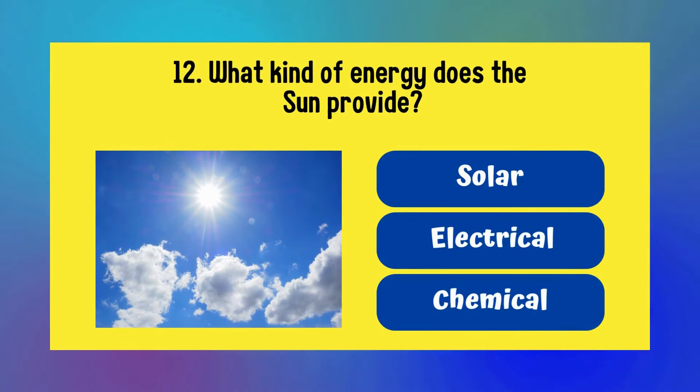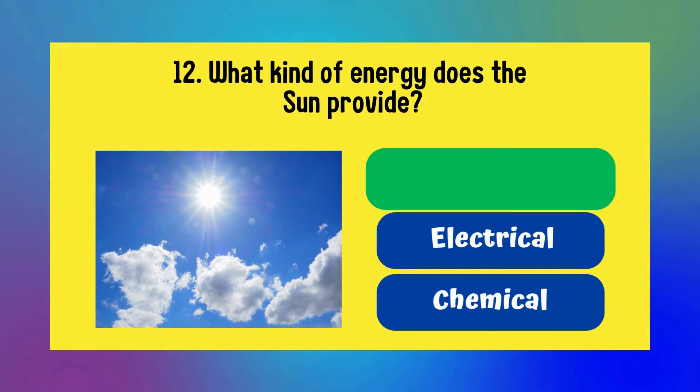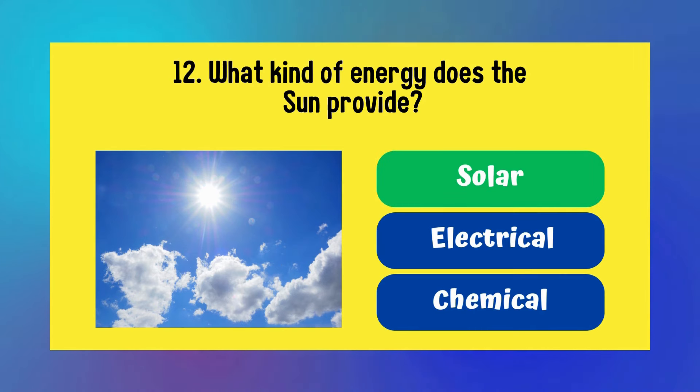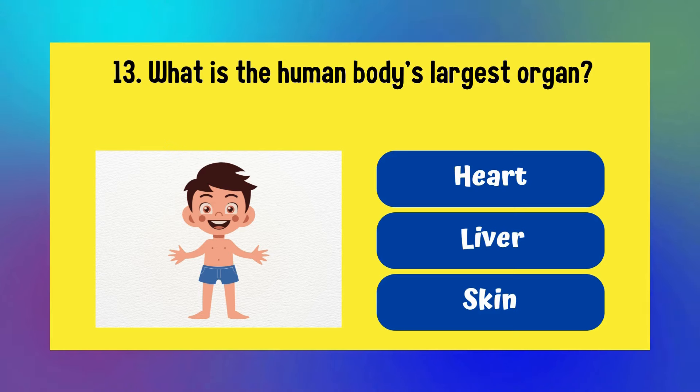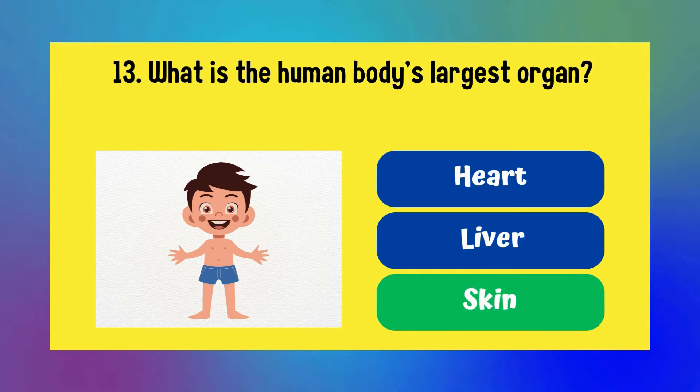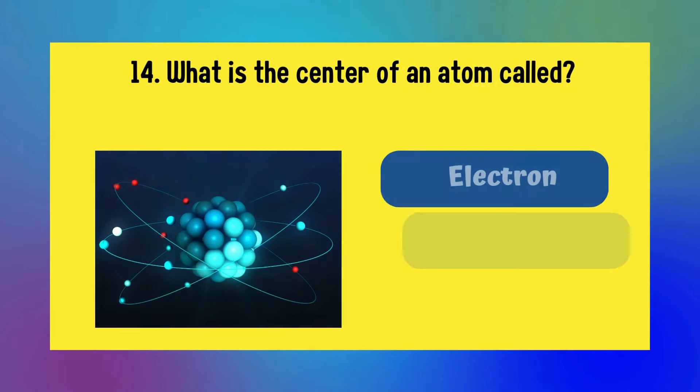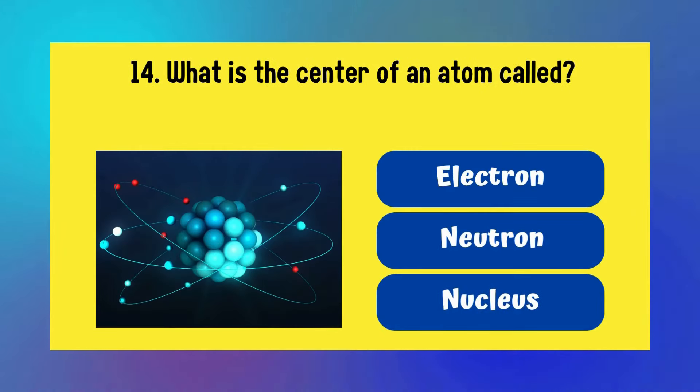What kind of energy does the Sun provide? Solar, electrical, or chemical? It is solar. What is the human body's largest organ? Heart, liver, or skin? Answer is skin.